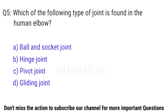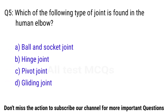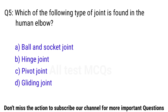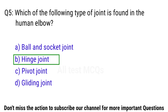Q5. Which of the following type of joint is found in the human elbow? The right answer is option B. Hinge joint.